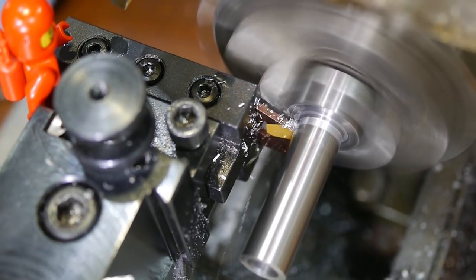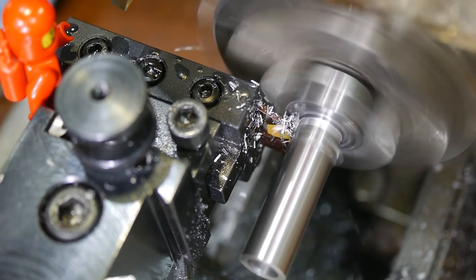With the outer diameter and bore complete, it was time to part off and flip the part around, to machine the wheel bearing surface.